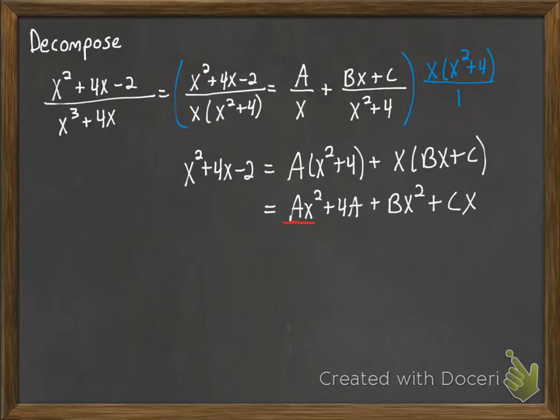Ax squared and bx squared, those two things have to combine together to give me the x squared term. And then we have a cx, it's the only x. So that has to correspond to the x term on the other side, the 4x. And the 4a has to correspond to the negative 2.